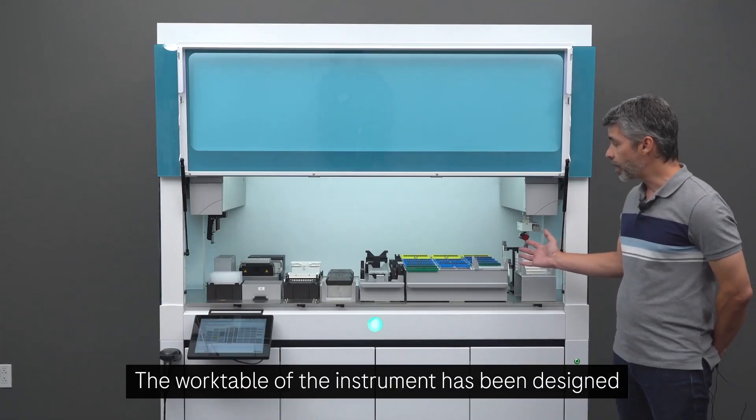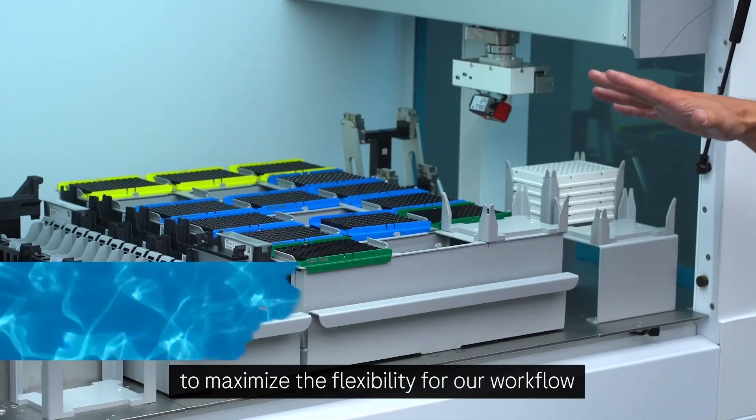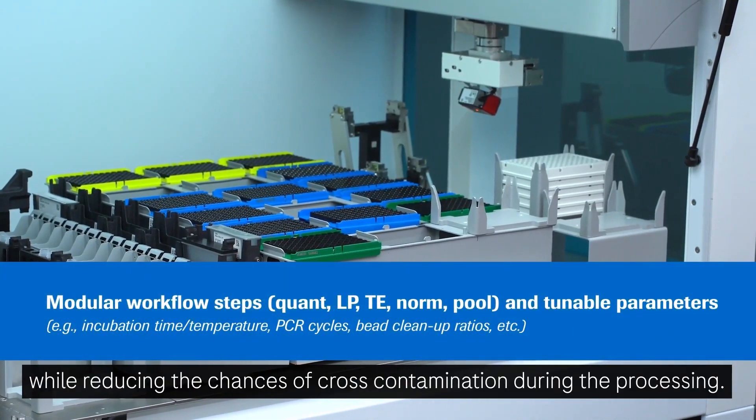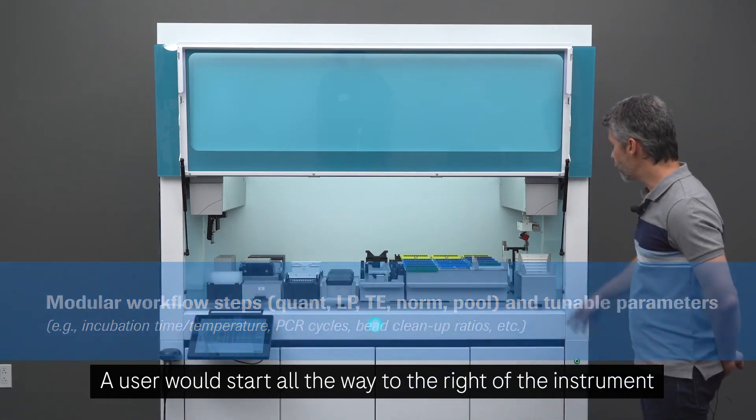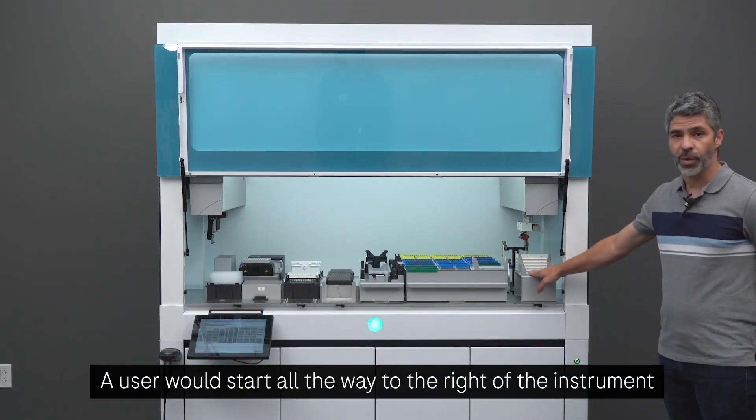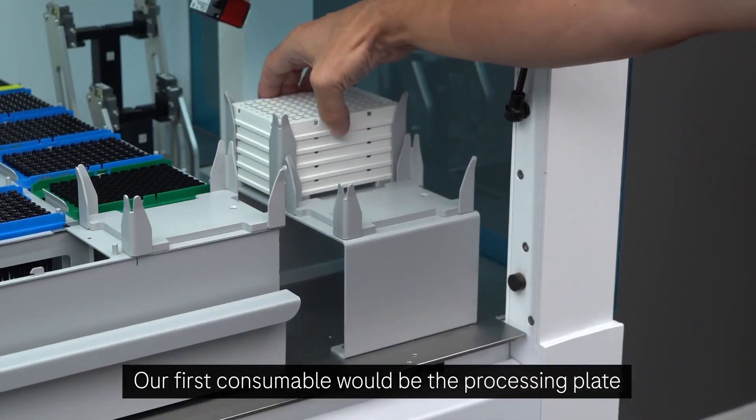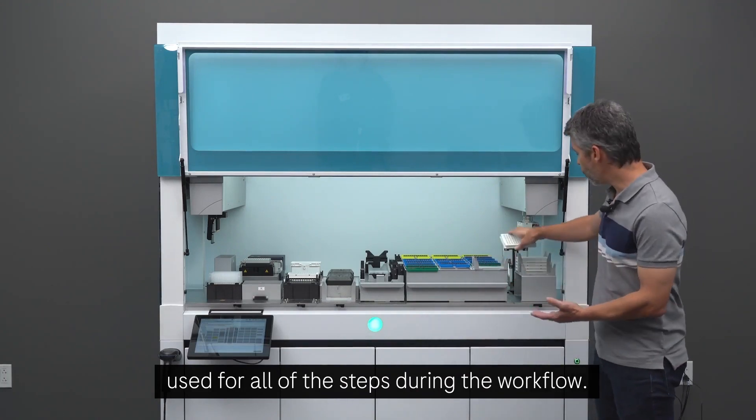The work table of the instrument has been designed to maximize the flexibility for our workflow while reducing the chances of cross-contamination during the processing. A user would start all the way to the right of the instrument to load the consumables. Our first consumable will be the processing plate used for all of the steps during the workflow.